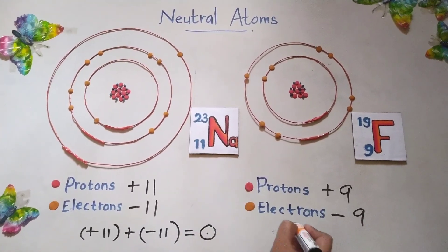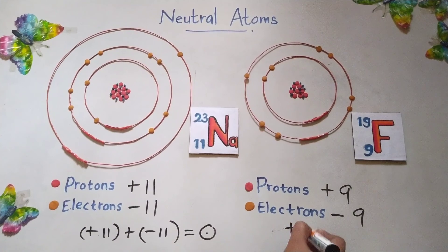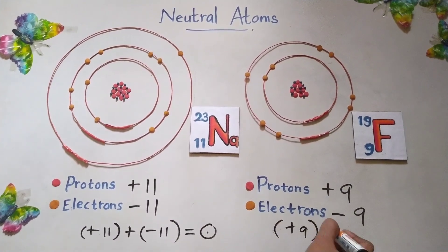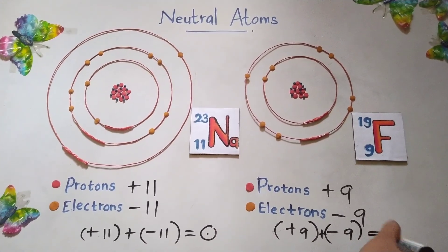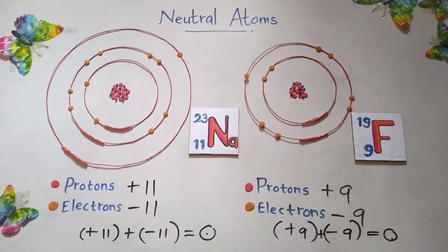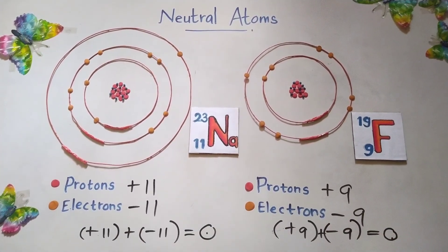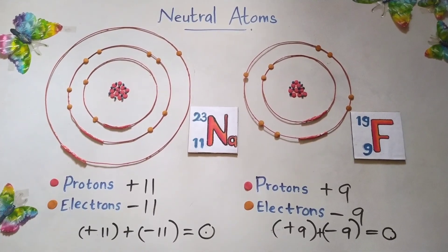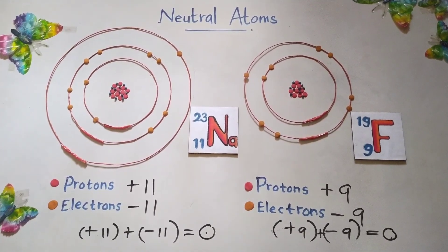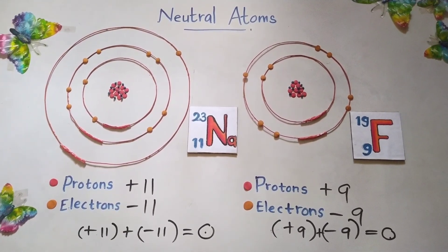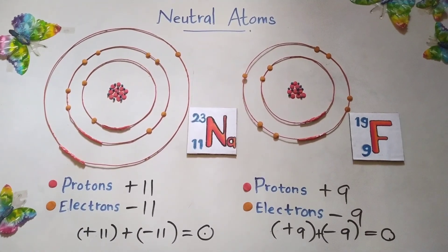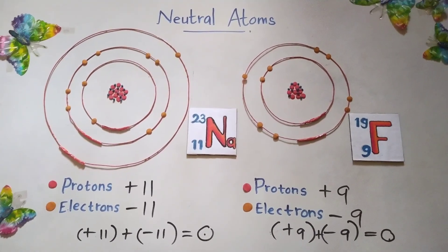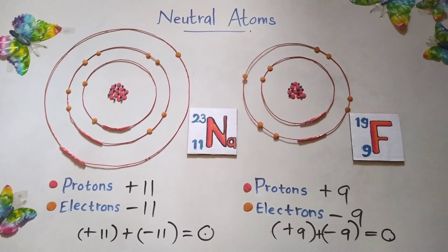Then if you look at fluorine, that will also be like that — positive 9, negative 9. When you add these two, the value will be 0. That means no final charge in both atoms. So if the final charge is 0, or no final charge in any atom, we call those atoms as neutral atoms.